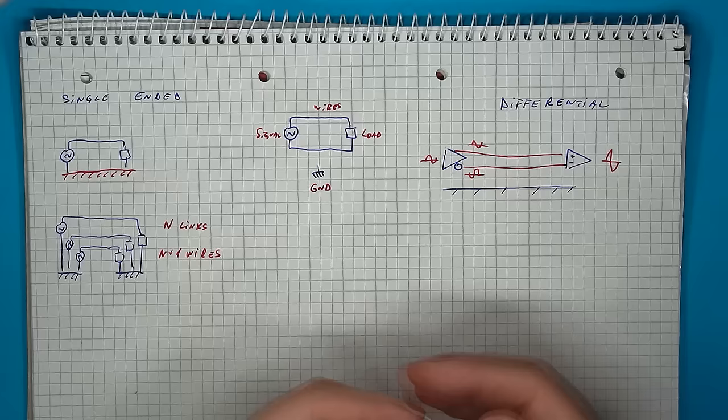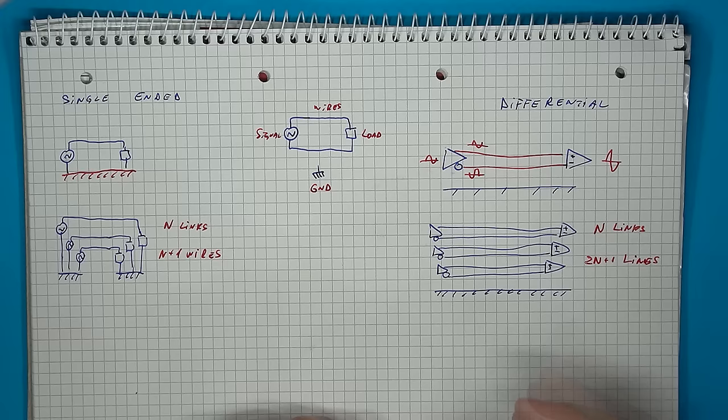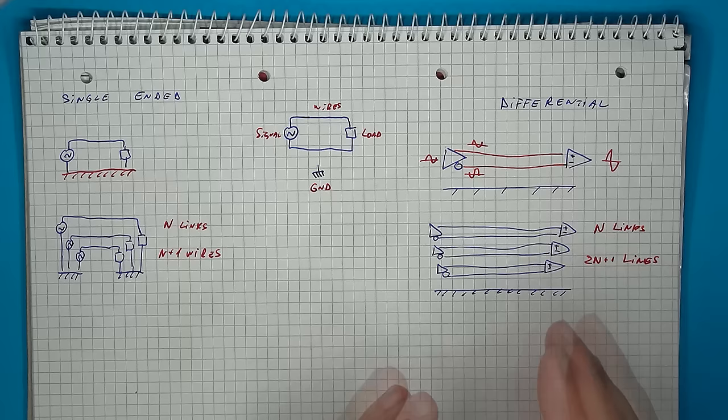So, the first obvious problem with this method is that you need far more lines. With 10 signal sources, you will need 21 lines. So, two for each signal plus the common ground. You also have far more complex transmission and reception circuitry. So, this inverting bit and the differential amplifier are extra bits not found in the single-ended circuits.